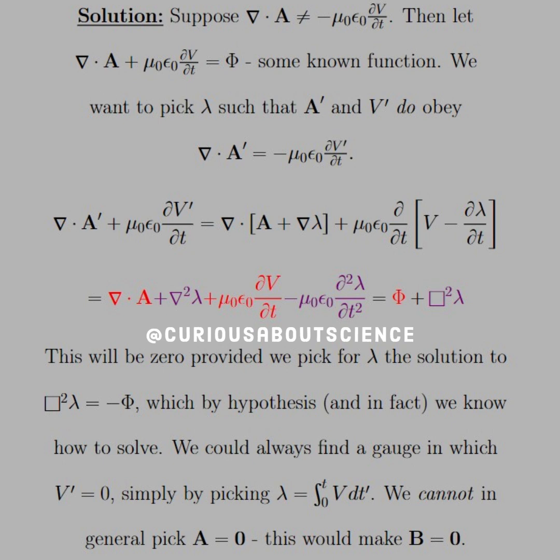And that's what we want. So the lambda has to, the box squared of lambda has to equal the negative phi in order for it to all work, makes sense. Which by hypothesis and in fact we know how to solve.